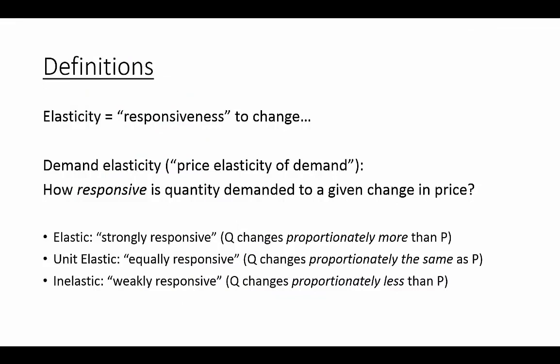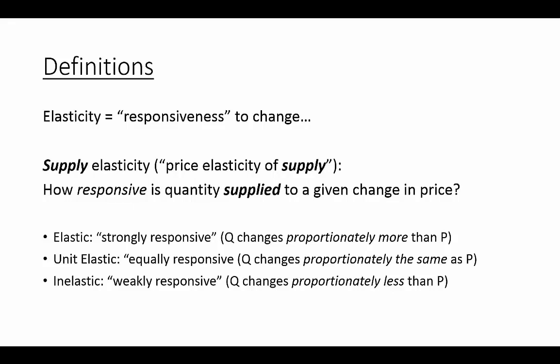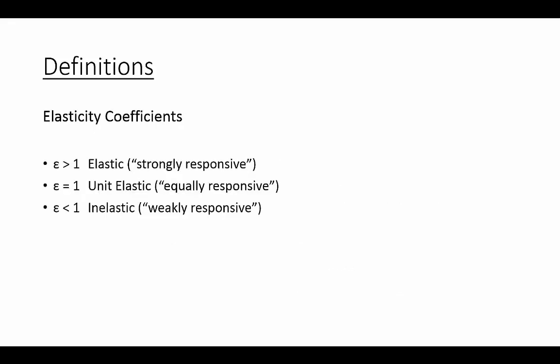So hopefully you have a good intuitive understanding of what this concept of elasticity means. And let me note before we move on that demand and supply elasticity are completely analogous concepts. So if I jump to the definitions of supply elasticity, everything's the same. I've just replaced the word demand with supply here. Price elasticity of supply is how responsive quantity supplied is to a given change in price. Then we can say whether it's elastic or inelastic. One more quick definitional item. The concept of measuring elasticity with elasticity coefficients, which we'll start doing in some sample problems in a moment. That's indicated with the Greek epsilon. And that can be either greater than one, which we'll label as elastic officially. It's equal to one that's unit elastic or it's less than one being inelastic.